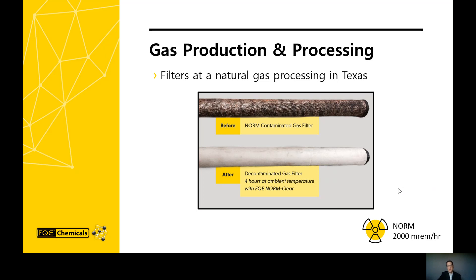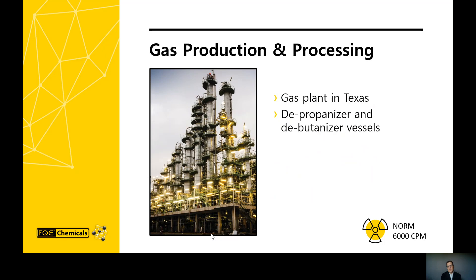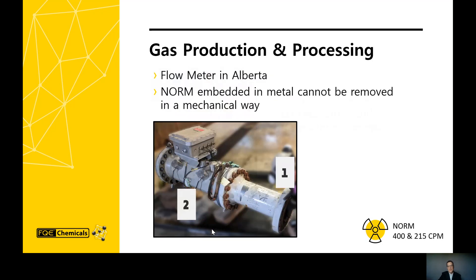An example where NORM has collected is shown here on a natural gas filter, which has collected enough NORM to measure over 2,000 millirems per hour. Another instance is shown at a natural gas plant in Texas, where NORM has built up inside the depropanizer and debutanizer vessels. The extent of the radioactivity was measured at 6,000 counts per minute, and the radiation could actually be detected on the outside of the vessel itself, traveling through the carbon steel. Here is a picture of a gas flow meter in Alberta where NORM was embedded in the metal even after mechanical cleaning, measured at 400 and 200 counts per minute — above legal limits — and thus the flow meter couldn't be put back into service.